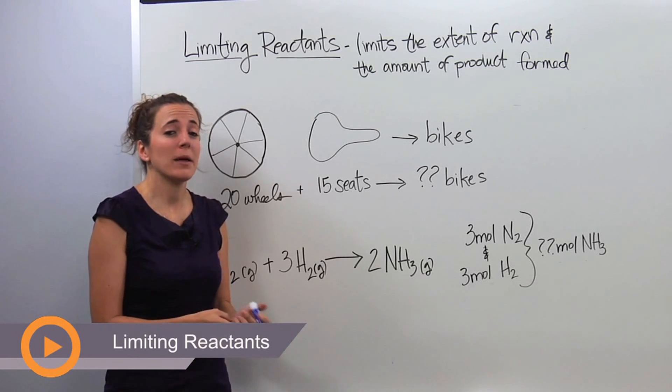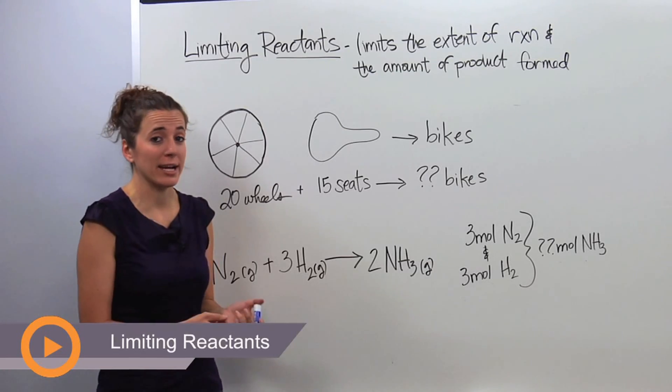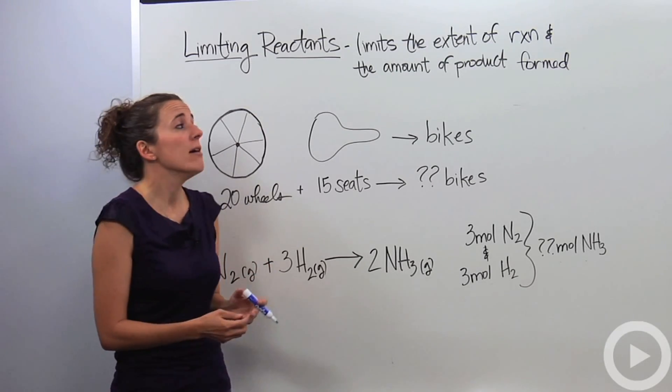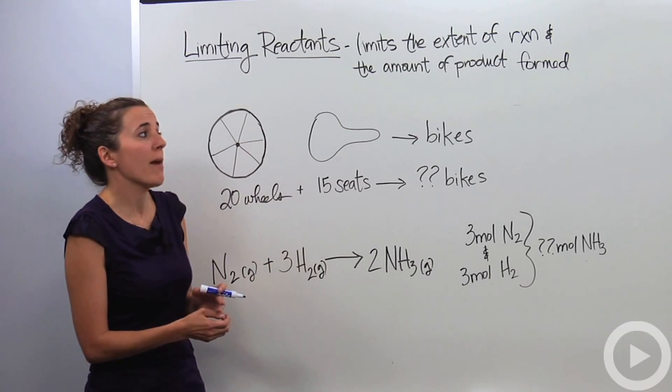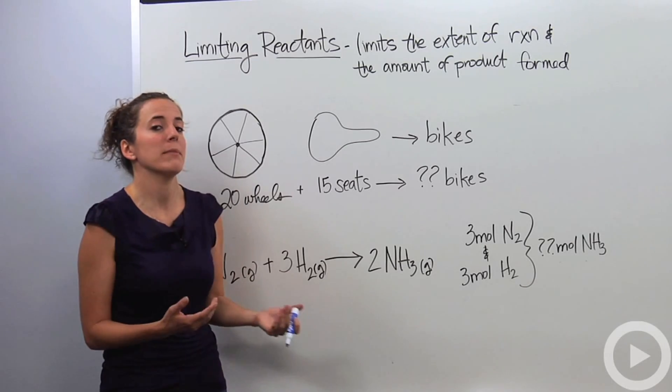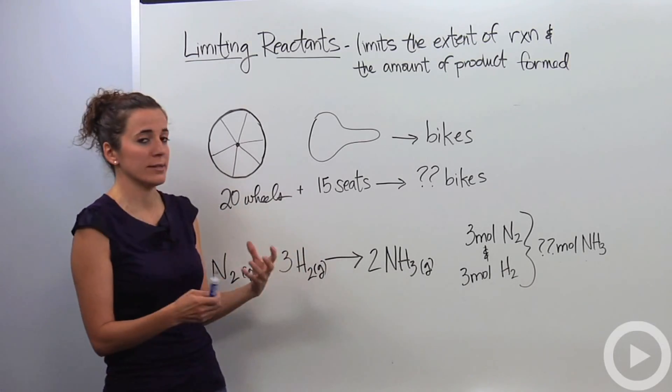All right, so in the stoichiometry unit, you're probably going to come across something called limiting reactants, also known as limiting reagents. And that limits the extent of a reaction and the amount of product formed. What exactly does that mean? Let's break it into something that makes more tangible sense to us.